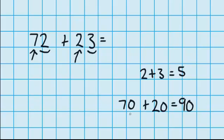Now just notice that this 70 and this 20 — we got them because this is 7 tens, not just a 7, and this is 2 tens, not just a 2. That's where my 70 and 20 have come from. So now I need to combine this 90 and this 5 together: 90 plus 5 equals 95. So 72 plus 23 equals 95.